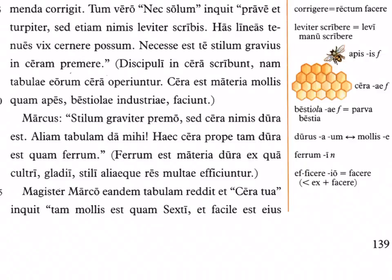'Haec cera prope tam dura est quam ferrum' — this wax is nearly as tough as iron. In the margin: 'ferrum est materia dura ex qua cultri, gladii, stili aliaeque res multae efficiuntur' — iron is a hard material from which knives, swords, styluses, and many other things are made in the ancient world.